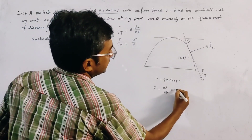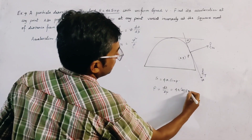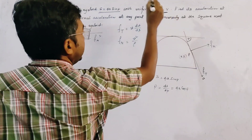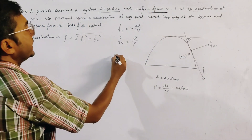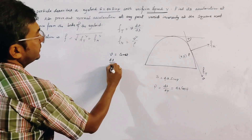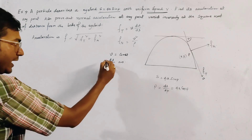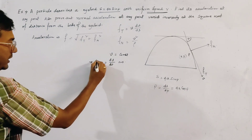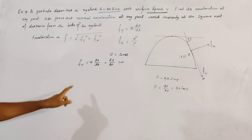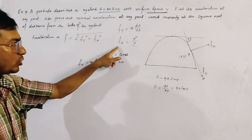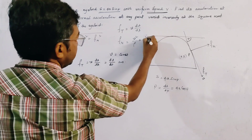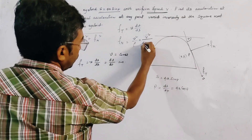We find the radius of curvature ρ = ds/dψ. Differentiating s = 4a sin ψ gives ρ = 4a cos ψ. Since the speed is uniform, v is constant, so dv = 0, which means the tangential acceleration ft = v dv/ds = 0. The normal acceleration fn = v²/ρ = v²/(4a cos ψ).